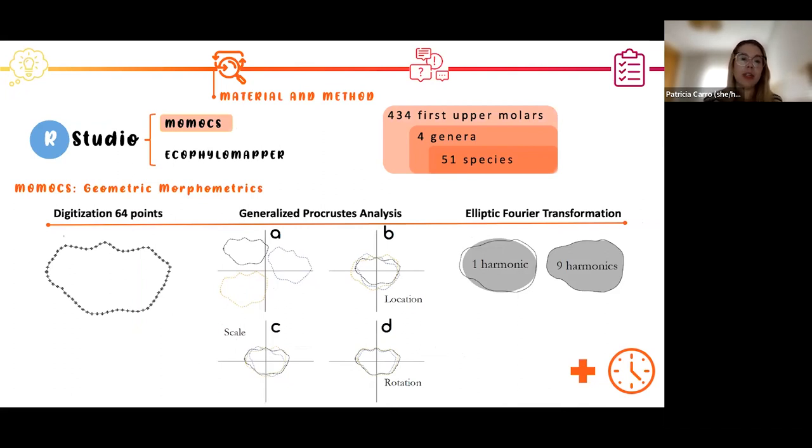First of all, I'm going to perform a geometric morphometric analysis using the package MOMOCS. I performed an analysis on more than 400 first upper molars, or M1, of these four genera that I said before, and 51 species.